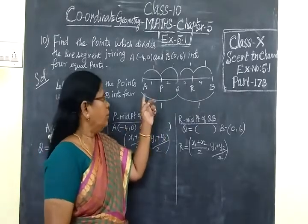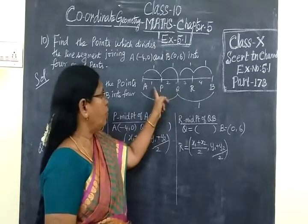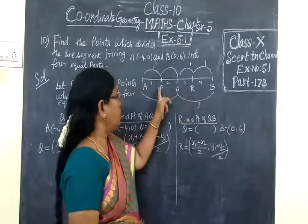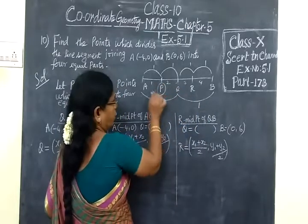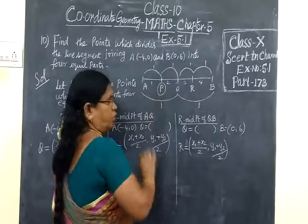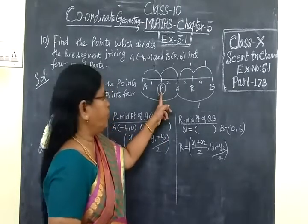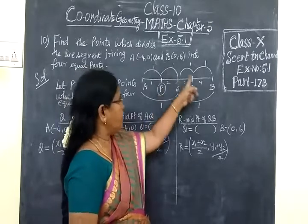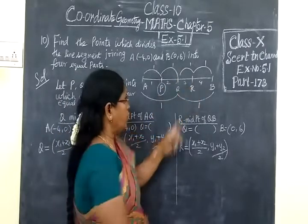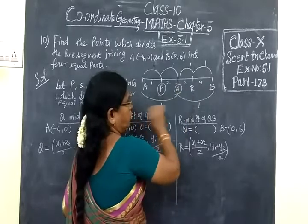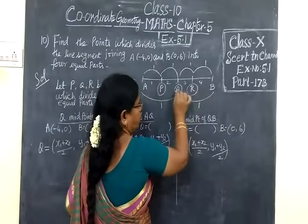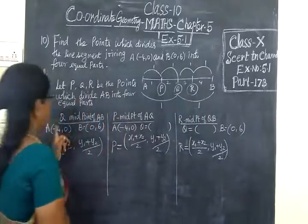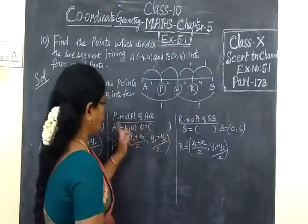For that, P is the midpoint of AQ. So 4 equal parts, something in this form - P is midpoint of AQ, Q is the midpoint of PR, and R is the midpoint of QB.